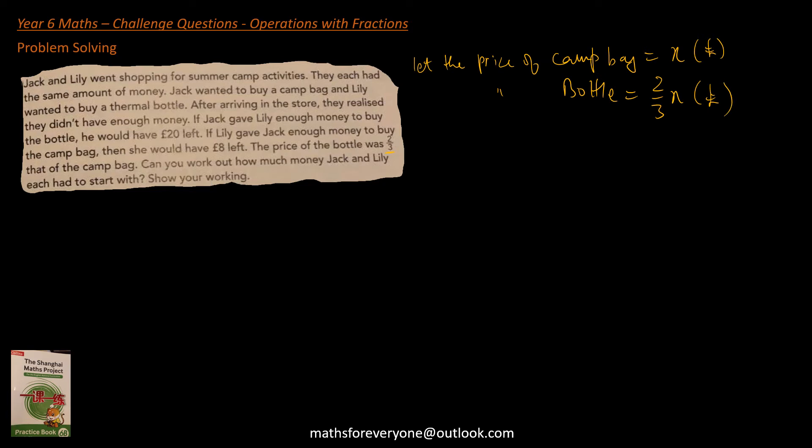And now we have to find out what Jack's money is and what Lily's money is. So once we know what Jack and Lily's money is and expressed in terms of the variable x, we can equate it because they have the same amount of money.